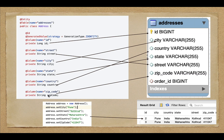To understand more about ORM, let's take one more example. Here we have an application domain model — the Address class — which has fields like id, street, city, state, country, and zip. On the other hand, we have an addresses relational database table with columns like id, city, country, state, street, and zip code. We can use ORM to directly map the fields from the Address class with the columns of the addresses table.